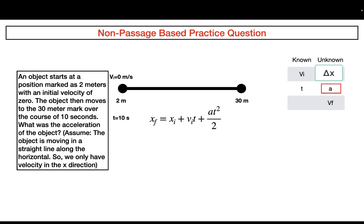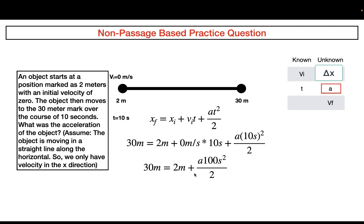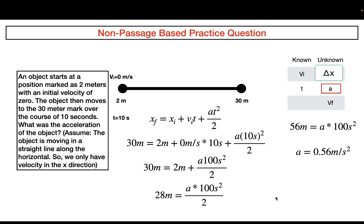Since we're solving for acceleration, we can use the equation XF equals XI plus VI times T plus AT squared over 2. Plugging in: 30 equals 2 plus (0)(10) plus A times 100 over 2. Simplifying gives 30 equals 2 plus 50A, so 28 equals 50A, and solving gives an acceleration equal to 0.56 meters per second squared. That's why choice C is the correct answer.